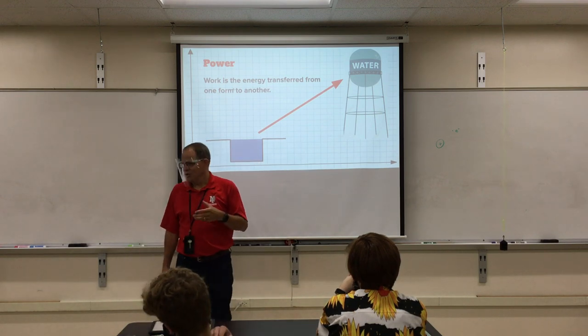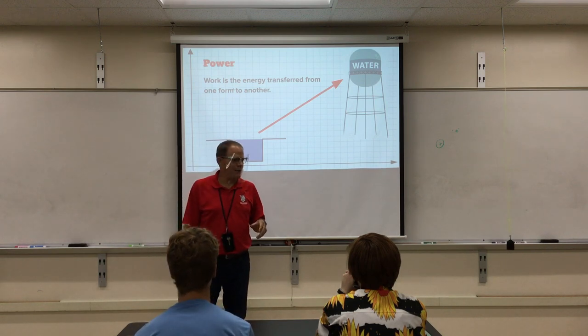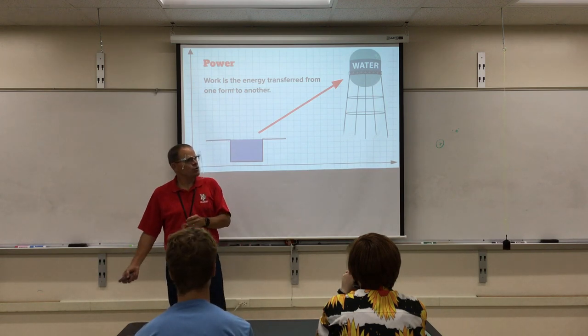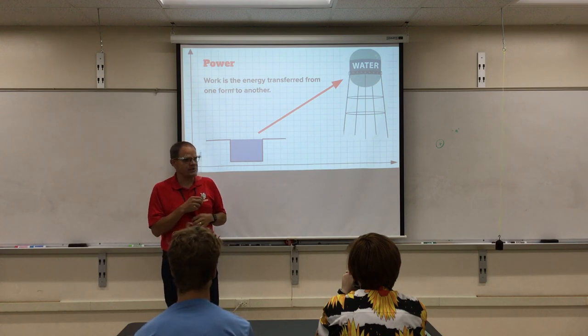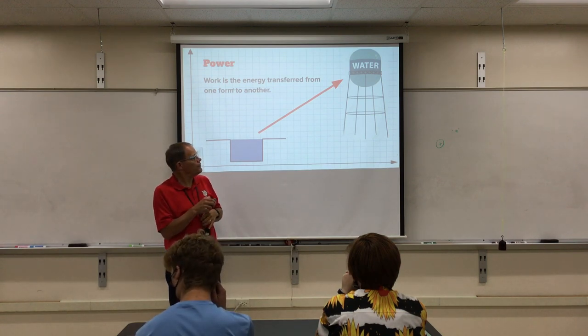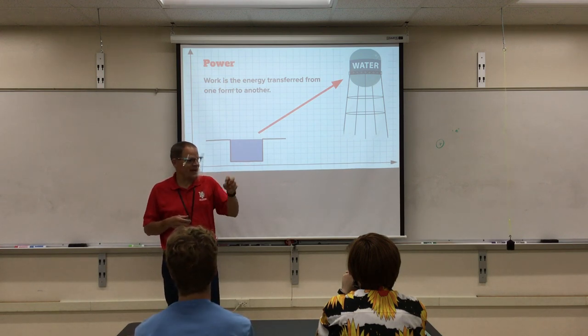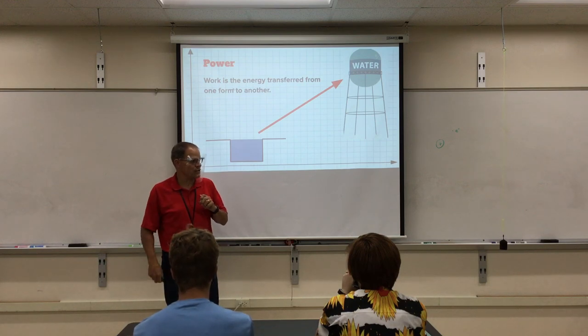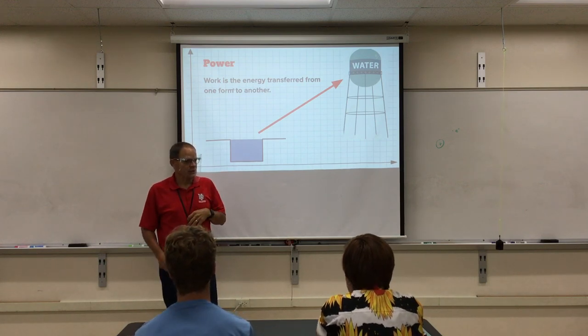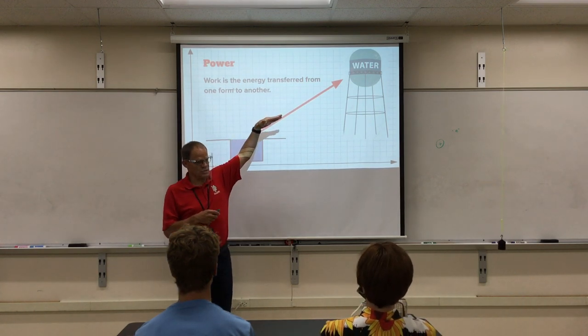We would say you are doing work. You are transferring energy from your Wheaties for breakfast, or Pop-Tart or whatever it was, to potential energy of the water. This water up here has potential energy because of gravity. You could, for example, turn your faucet on, and the water comes rushing out because it has potential energy. And you could use that to spin a turbine and make a little bit of electricity or something else. So this has energy because it's been lifted up. Lifting it up takes energy.